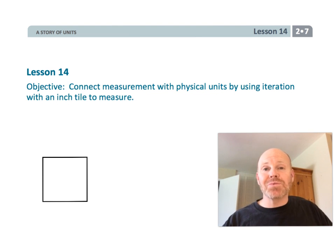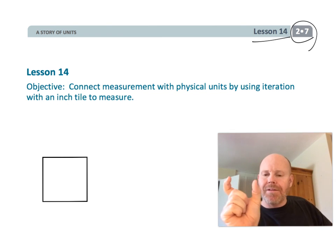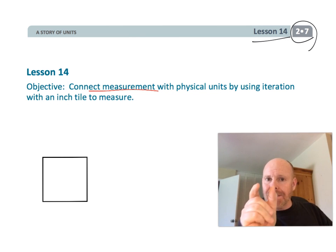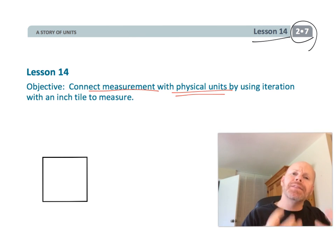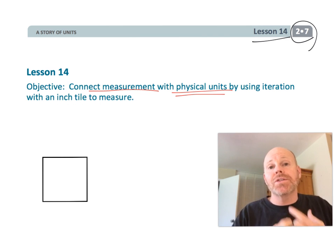All right, this is second grade module 7 lesson 14 and in this lesson students are going to be connecting measurement with a physical unit that they're going to just take and they're going to iterate. They're just going to put side by side by side by side and in this case they're going to be using the square inch.